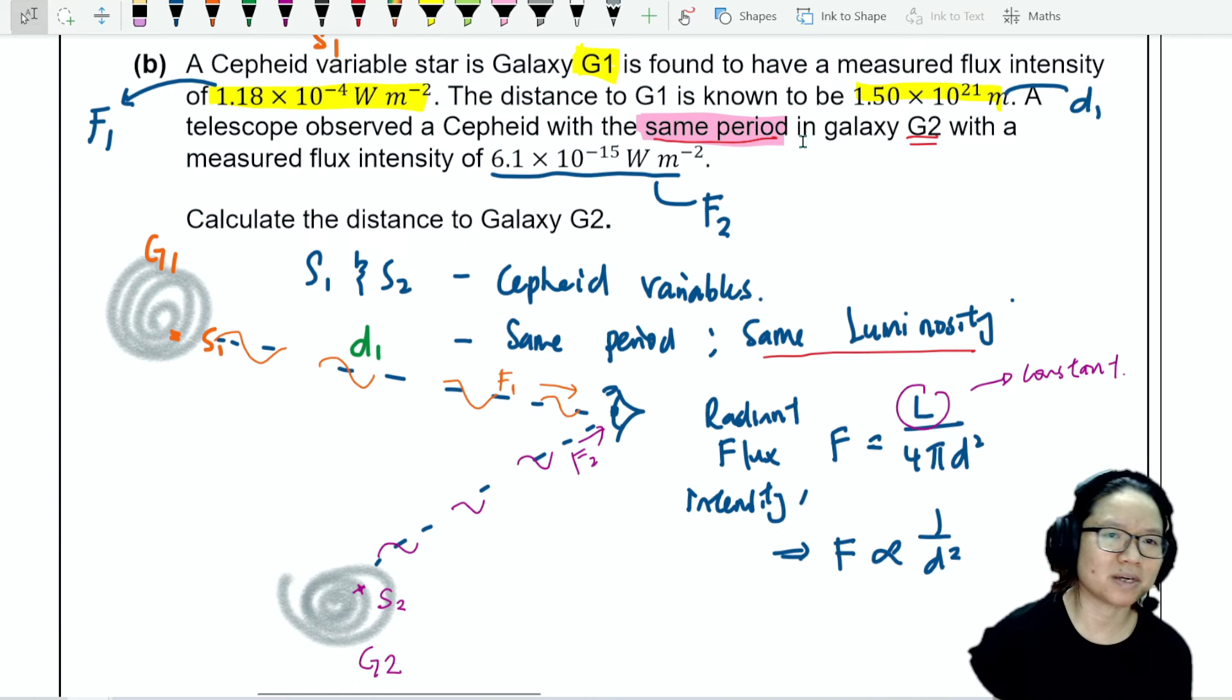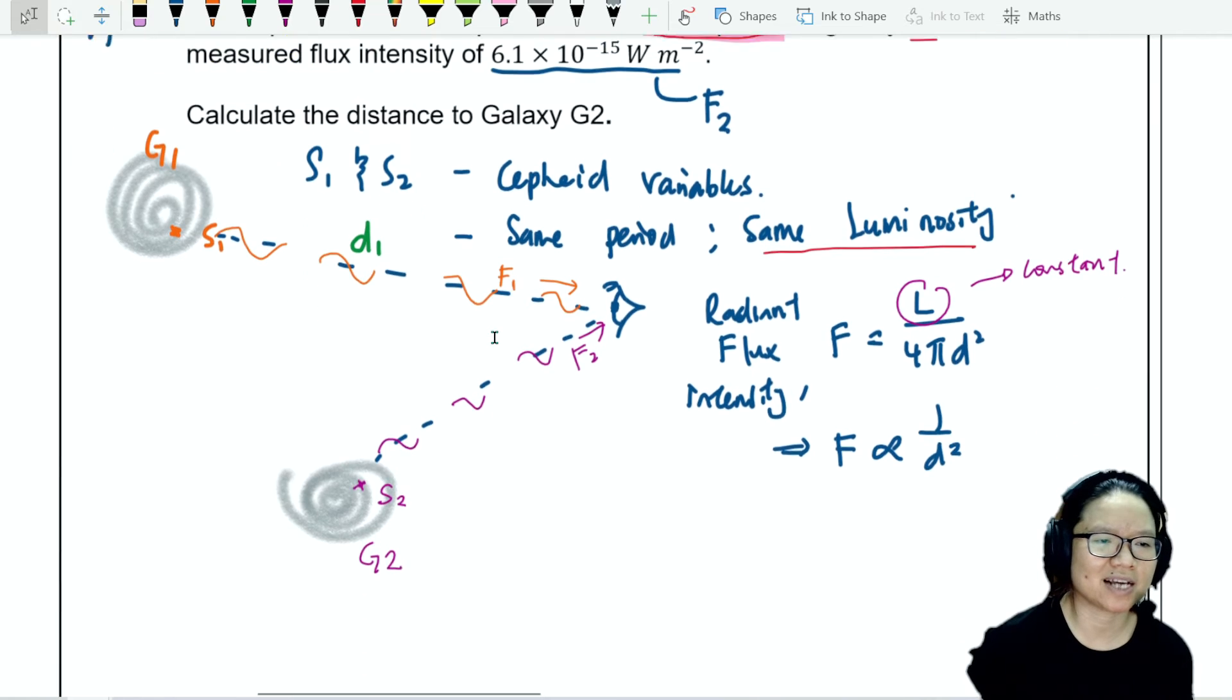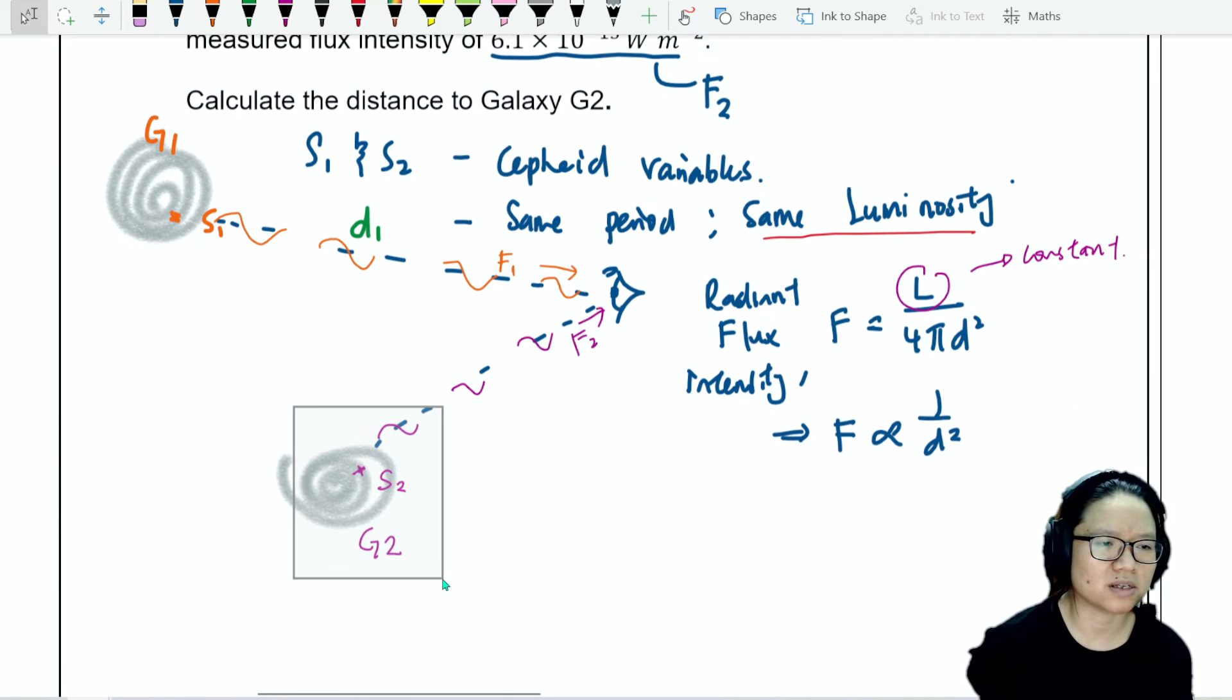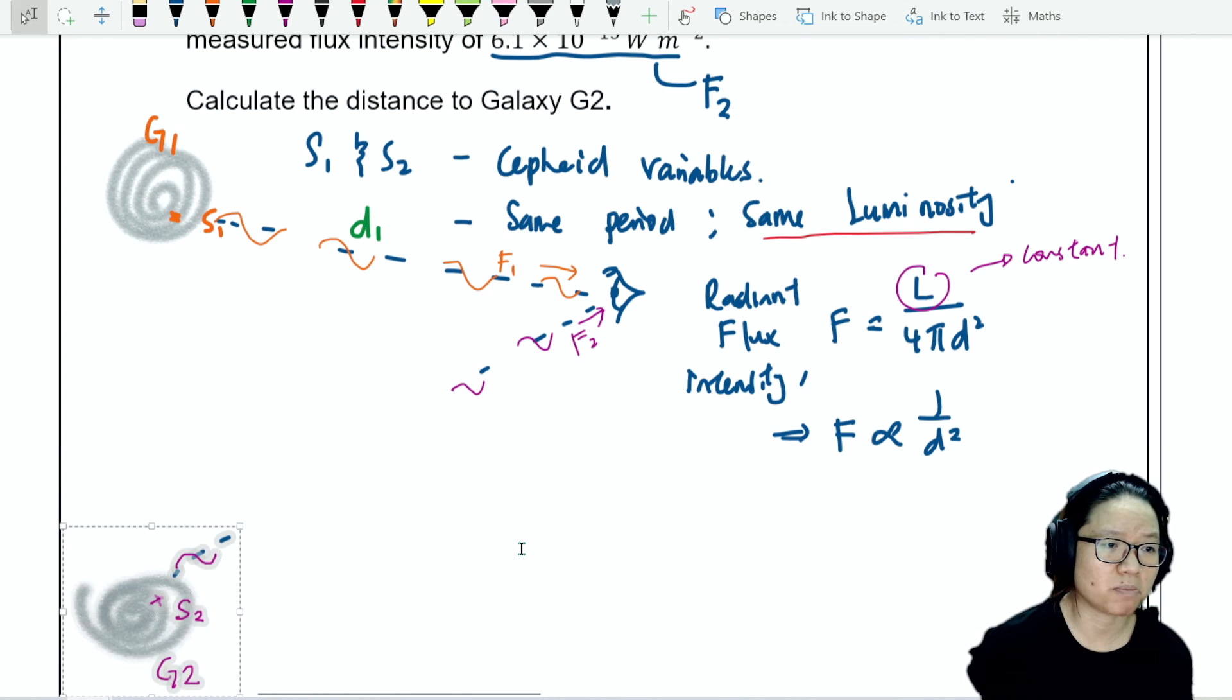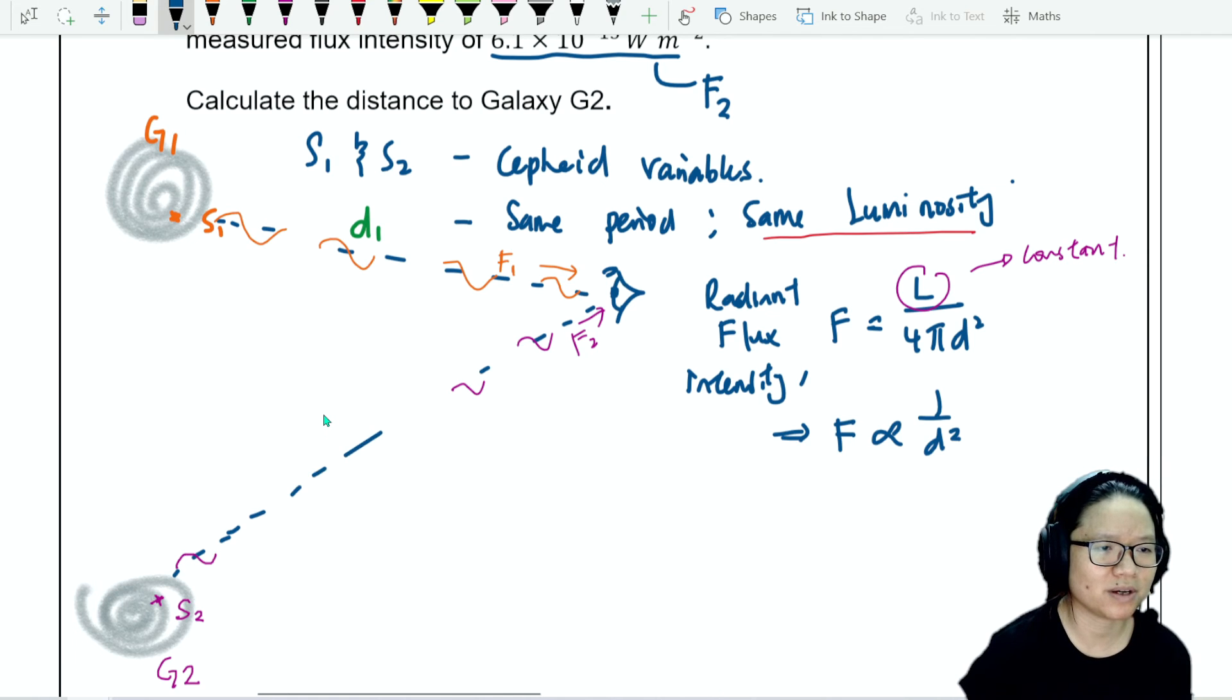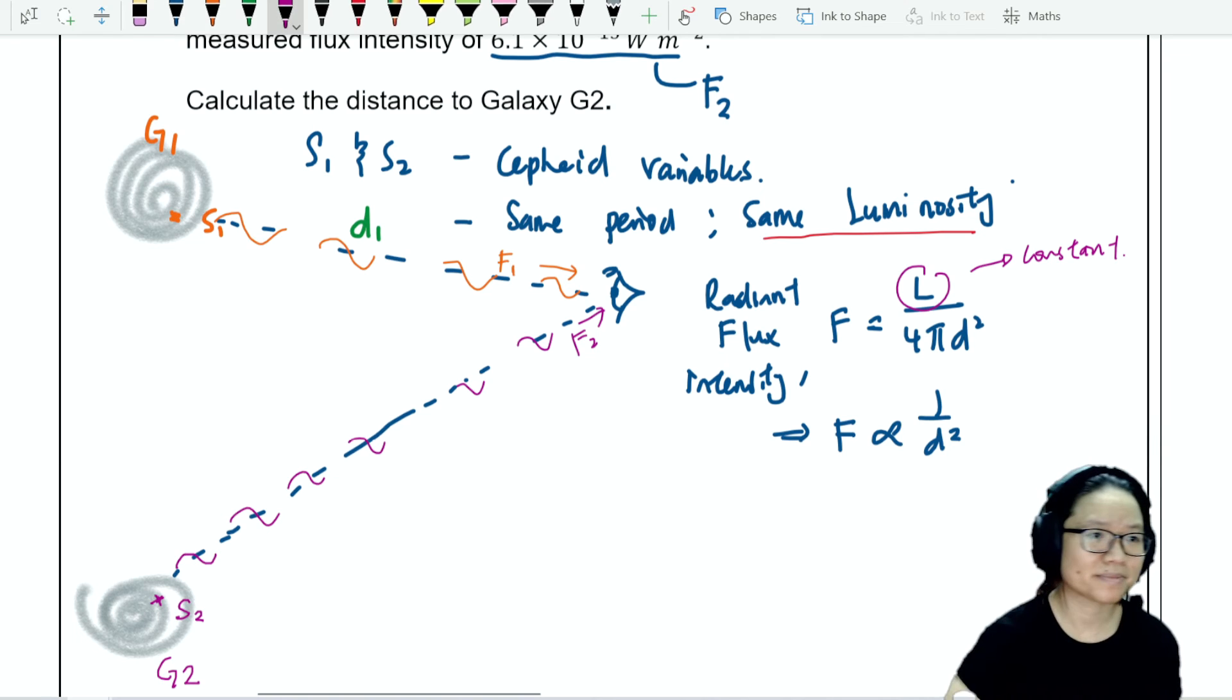Inverse square law has appeared again, and you're asking about the distance of the galaxy G2. Actually, to make this a bit more accurate, G2 will be further away. So maybe I'll pop it down here. Did you know how you know G2 is further away? Well, F2 is smaller. So this one would be D2.